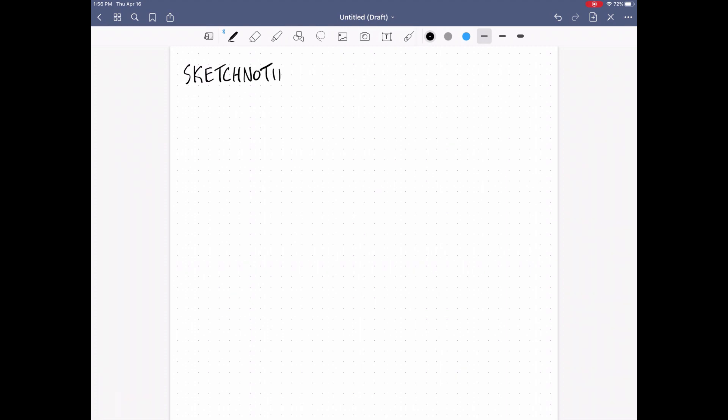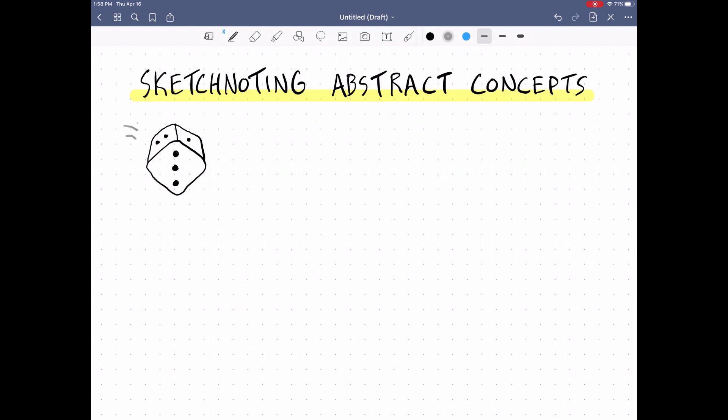From there I decided to work on an activity that I had proposed within the Verbal2Visual community where the latest prompt was about sketchnoting abstract concepts like rolling a die for luck, a pie chart to represent math, a balance scale here for comparison,